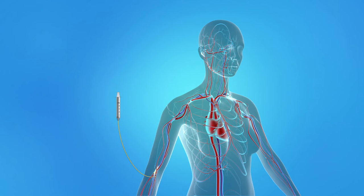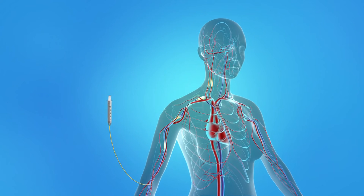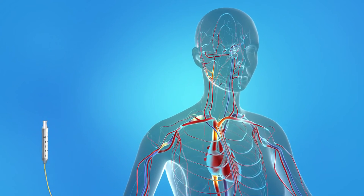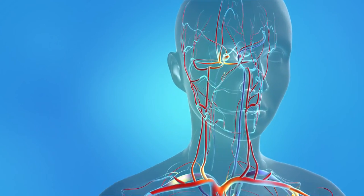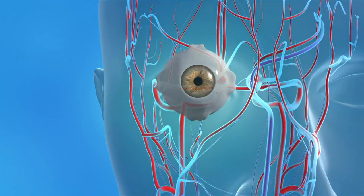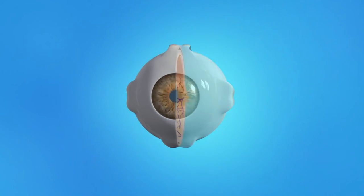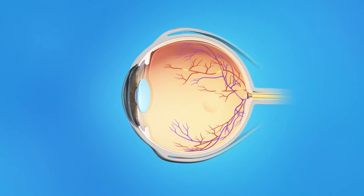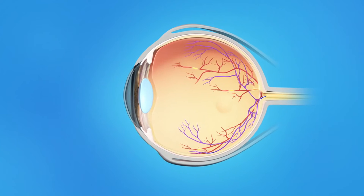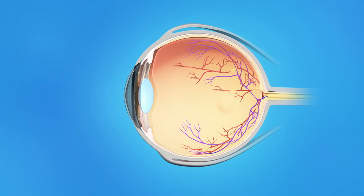With angiography, a colored dye is injected into a vein in your arm or in your hand, where it travels throughout the blood vessels in your body. As the dye passes through the eye's blood vessels, a special camera takes photographs of the retina or choroid blood vessels.